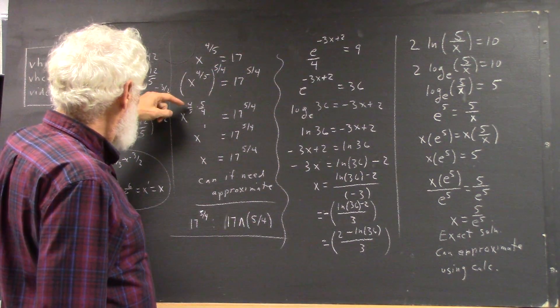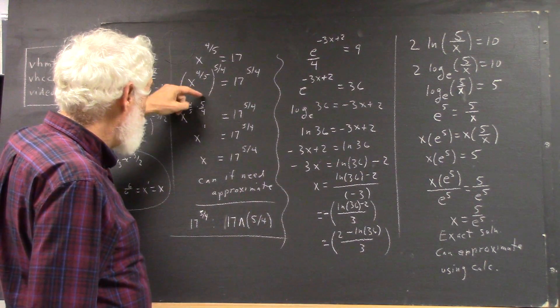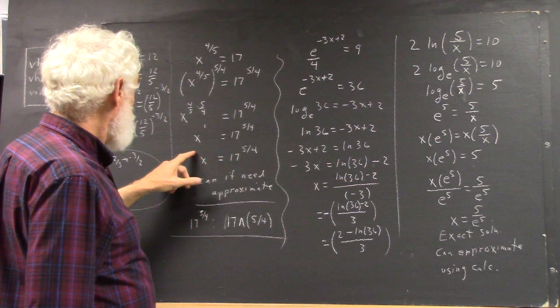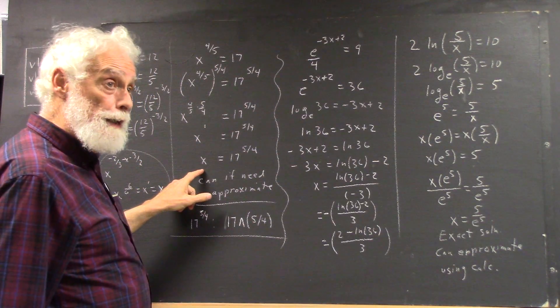Why? Because that gives us x to the 4/5 times 5/4, and we can easily verify that equals 1. So we have x to the 1, which is just x.